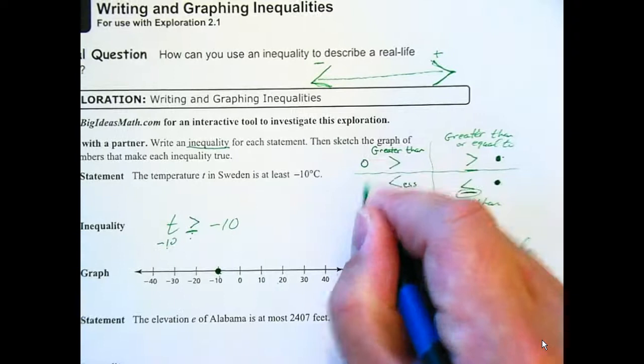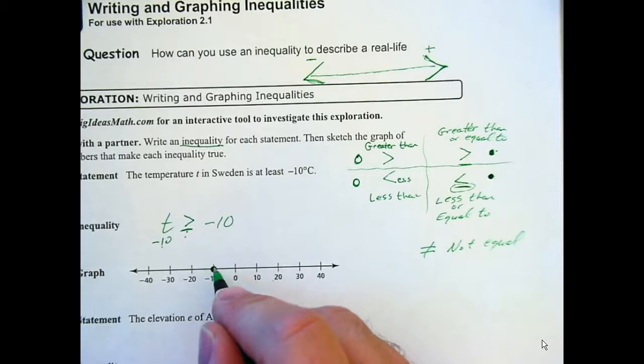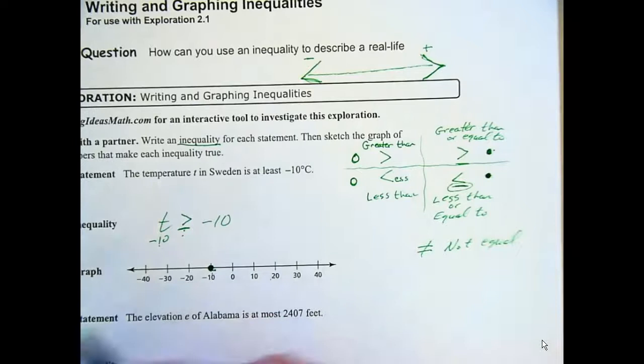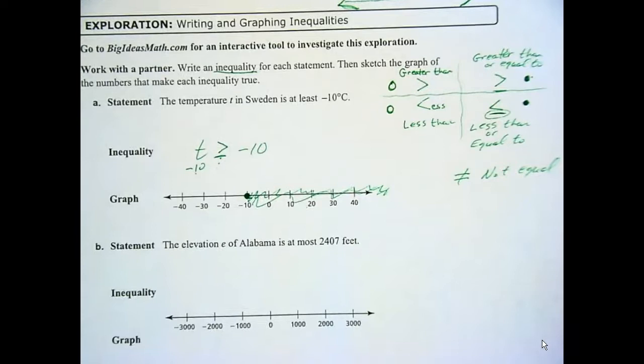Yep. So these or equal to pieces, you have to put closed dots on when you're graphing. It means it's included in your solution. Whereas, these are open dots because they would not be included. You'll see that in the next one. Or actually, you'll see it on some of these other ones here. Okay, so when I shade this one, which way are my answers? Are they to the right or to the left? To the right. All right. Okay, so we shade all to the right.